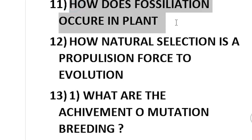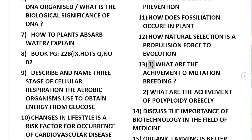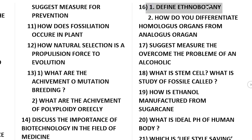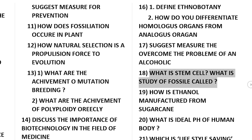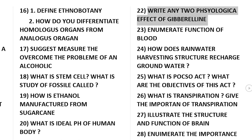How does fossilization occur in plants? How does natural selection act as a propulsive force in evolution? Define genetic energy. What are the achievements of mutation breeding? Discuss the importance of biotechnology in the field of medicine. Organic farming is better than the green revolution — give reasons. Define ethnobotany. How do you differentiate homologous organs from analogous organs? Suggest measures to overcome the problems of alcoholism. What is a stem cell? What is the study of fossils called? How is ethanol manufactured from sugarcane? What is the ideal pH of the human body? Which is the life-saving hormone? Why is it called so? Write any two physiological effects of gibberellins.